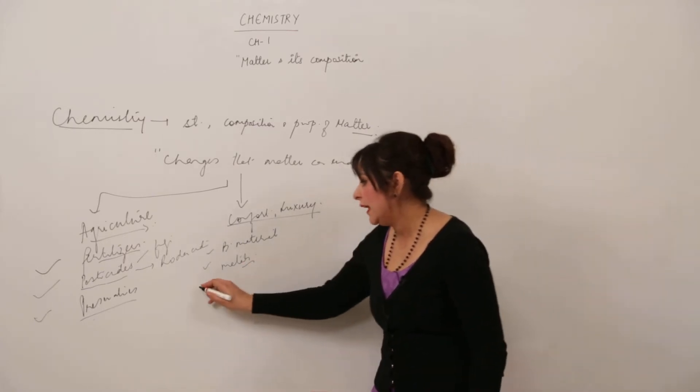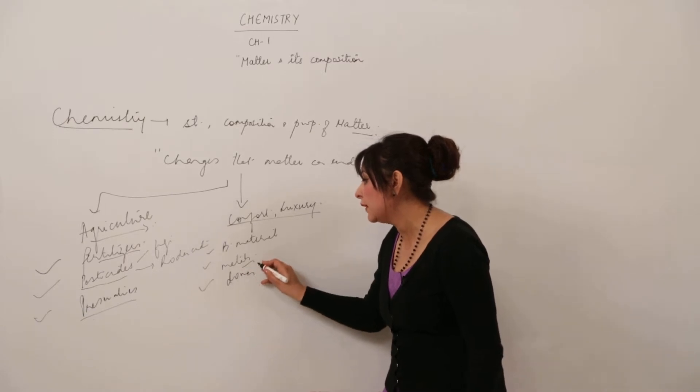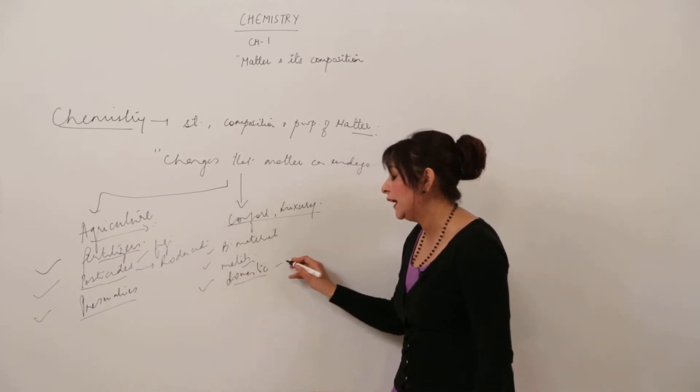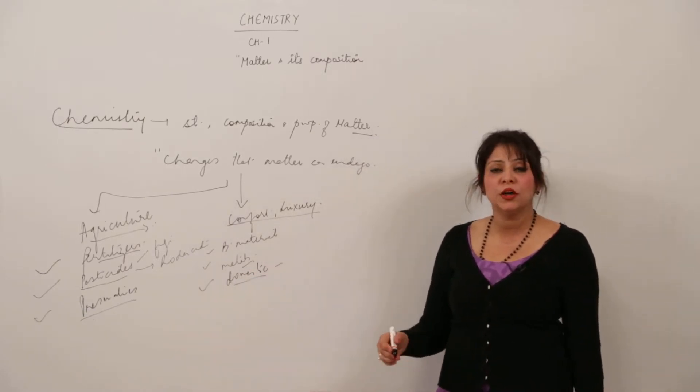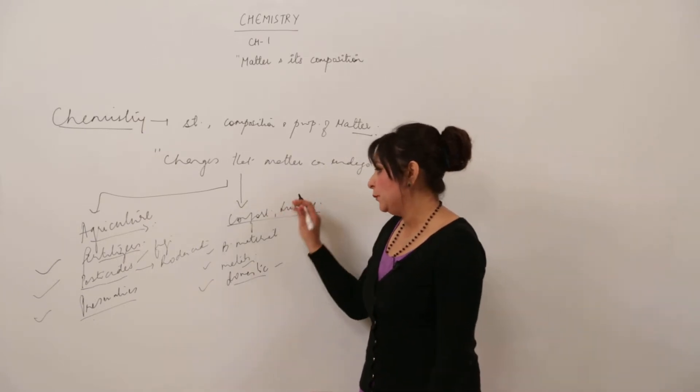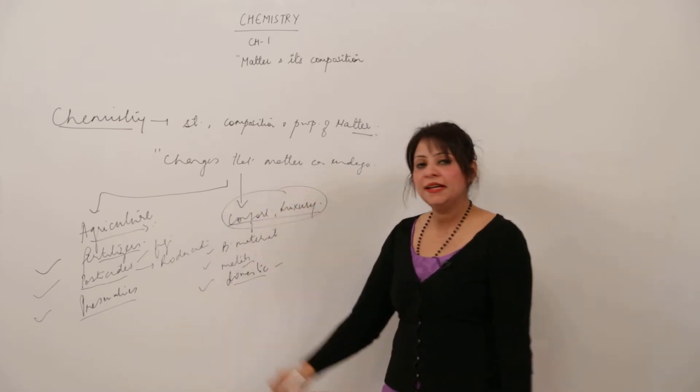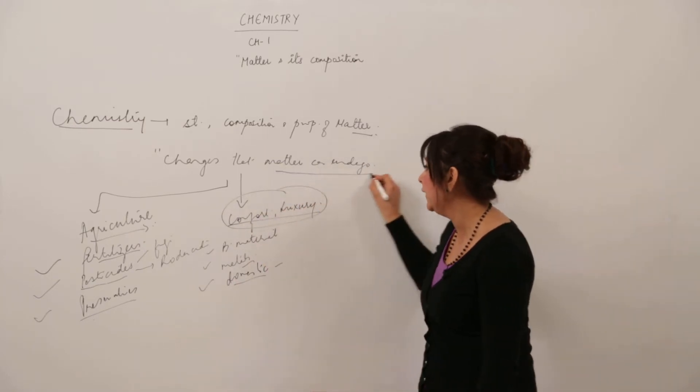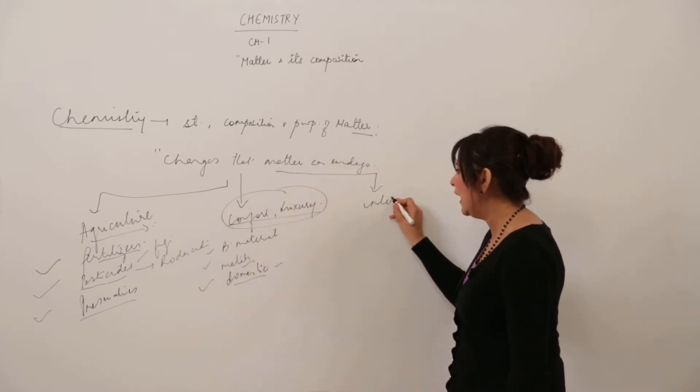Likewise, we have many domestic articles which we are using like perfumes, cosmetics, and much more. These are all chemical compounds, so again it plays an important role in comfort and luxury as well. It also plays a role in entertainment.